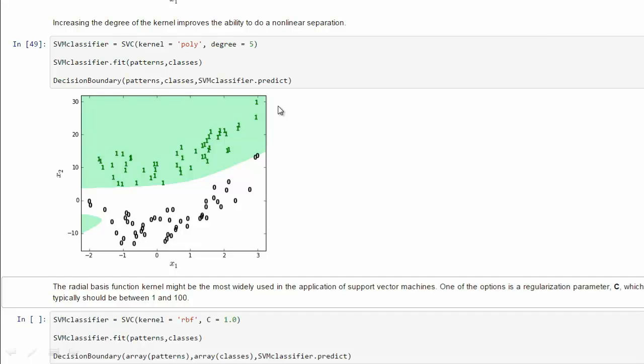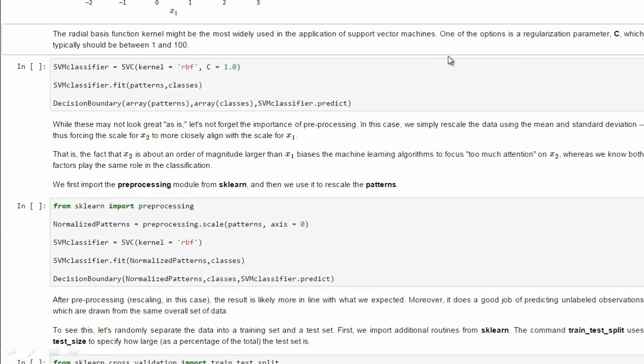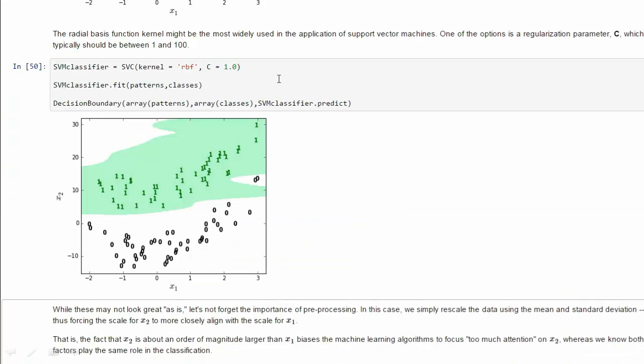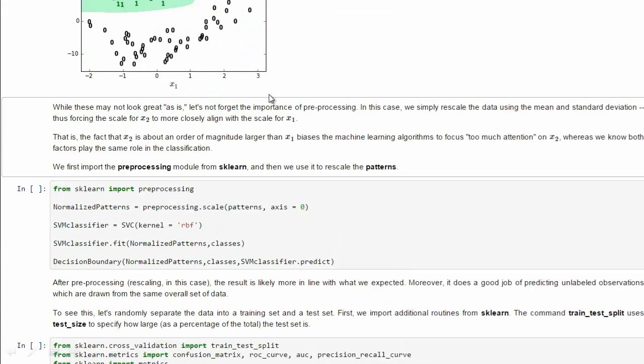Let's use, instead of a polynomial, let's use a radial basis function. Now, this is the one that's used very often. The embedding space is actually infinite dimensional. And it has this regularization parameter. And it actually does a pretty good job, but still not necessarily what we want.